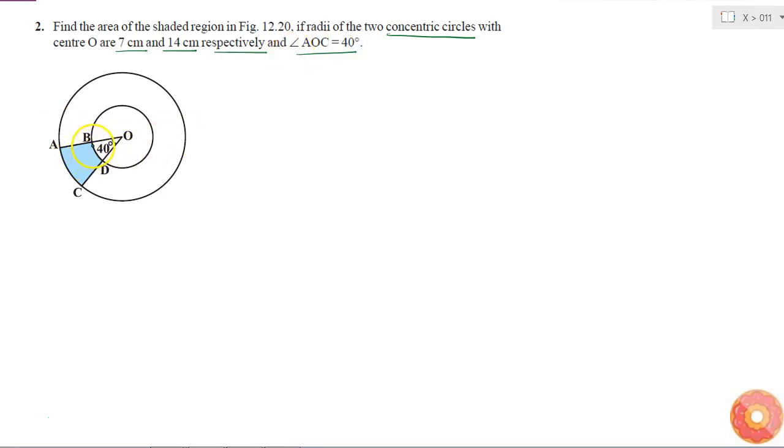Here there is this shaded part. It is not a standard shape for me to apply any formula, but what can I see? Here I can see that this shaded part is the area of sector OAC minus the area of sector OBD. Because area of sector OAC is this entire part, from that if I remove this, then I will be left with the shaded part.